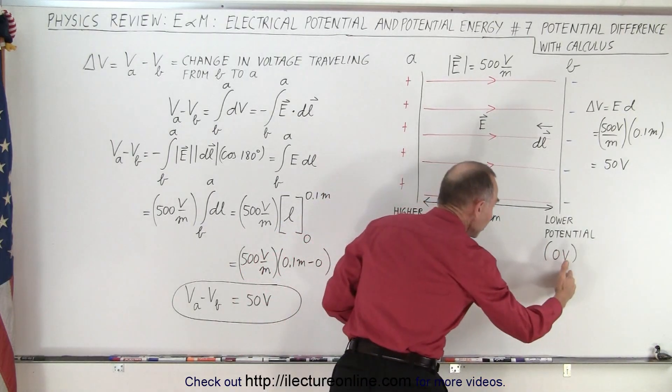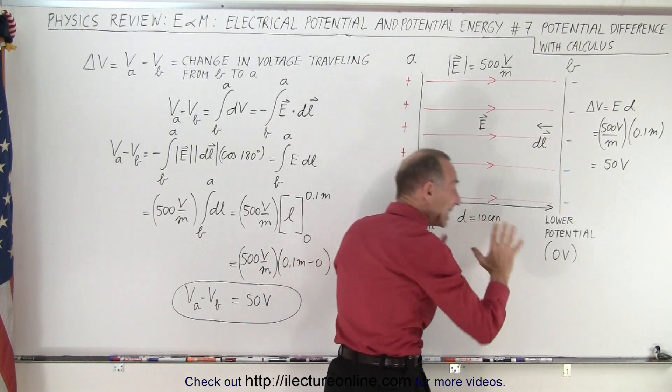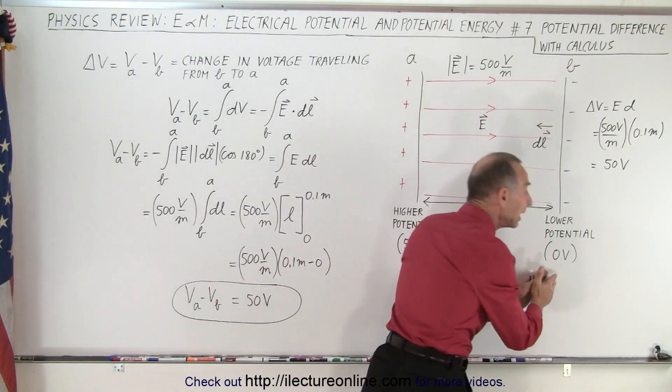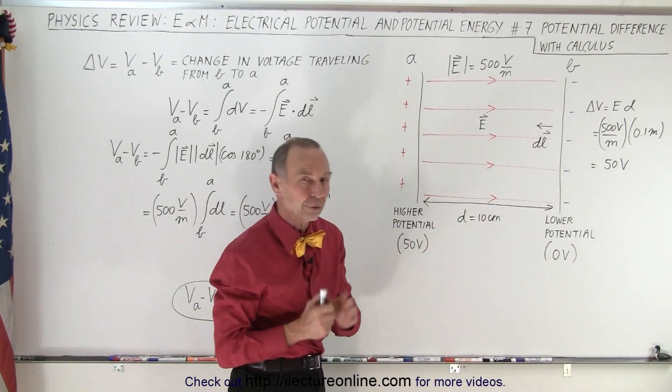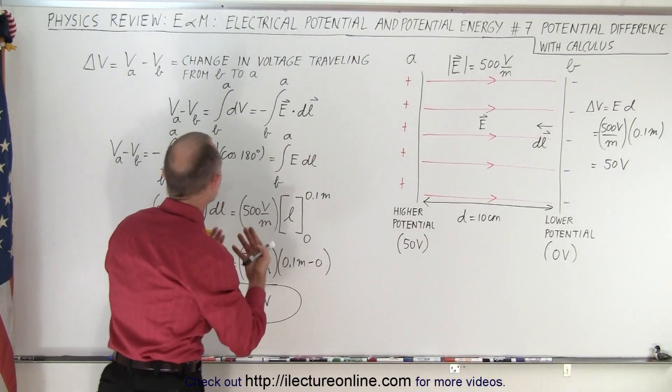Now it's an increase in voltage going from zero to here from the negative side to the positive side. It's an increase of 50 volts and going from the positive side to the negative side it is a decrease of 50 volts. That's how we need to look at it. So how do we calculate it using calculus?